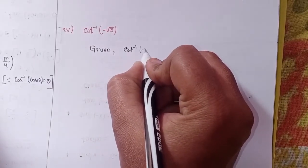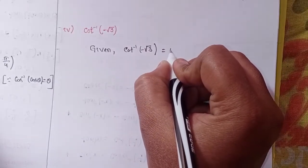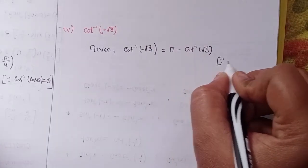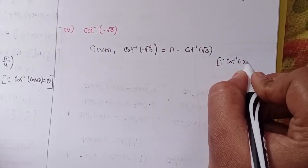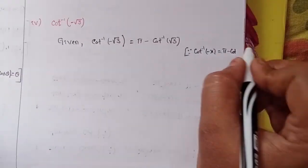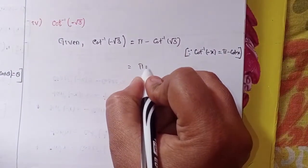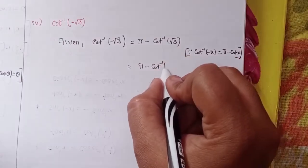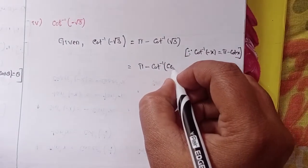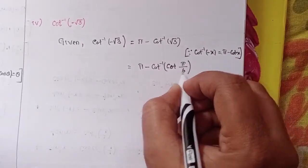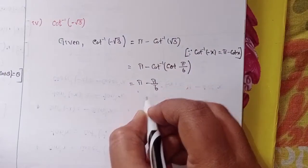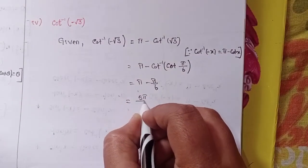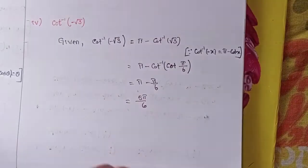Fourth one: given cot inverse of minus root 3 equals pi minus cot inverse of root 3, since cot inverse of minus x equals pi minus cot inverse x. Can I write root 3 in terms of cot as cot(π/6)? So pi minus π/6 gives 5π/6.